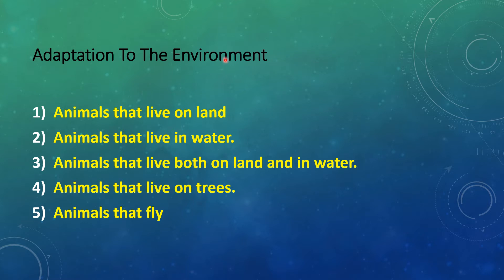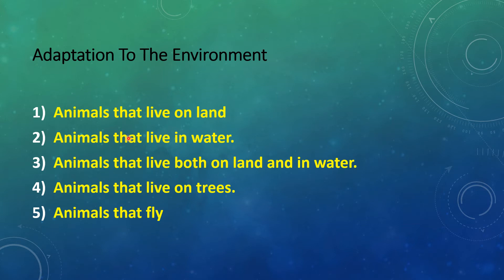Animals can be placed under five major groups according to their habitat. There are five categories: animals that live on land, animals that live in water, animals that live both on land and in water, animals that live on trees, and animals that fly.